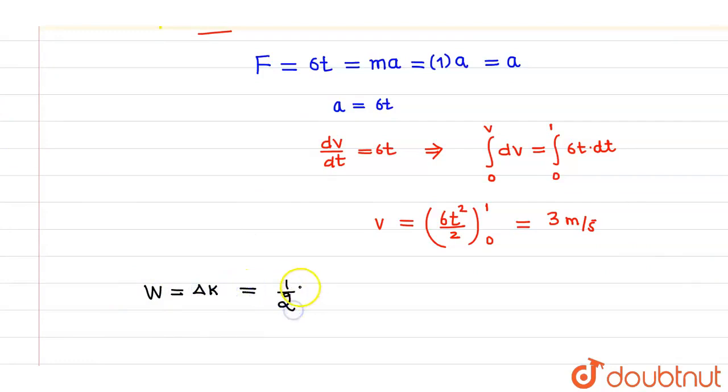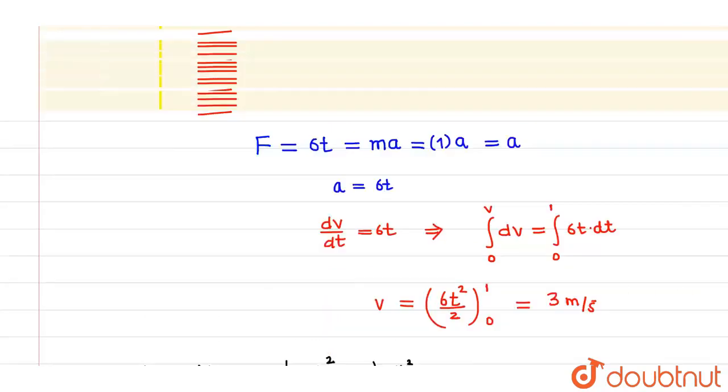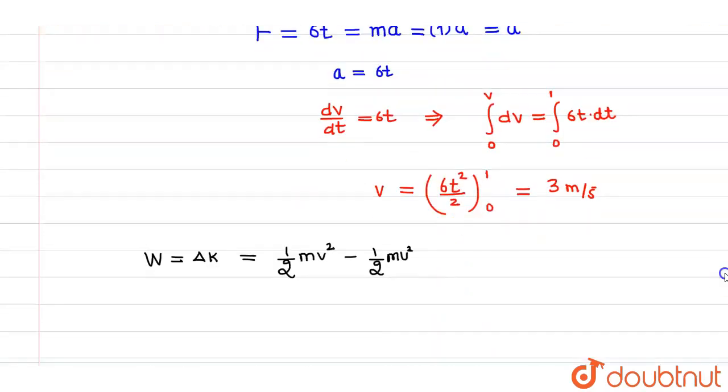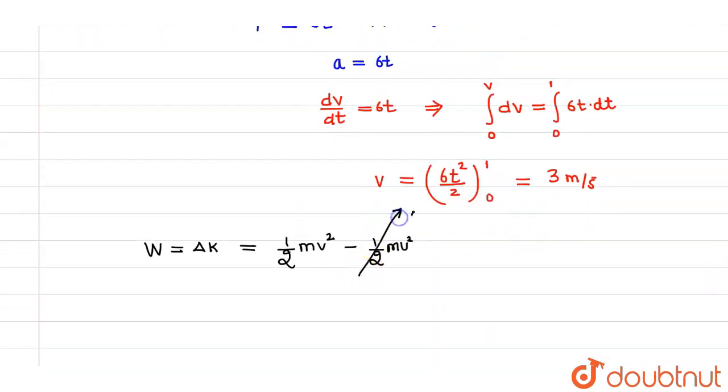But since it started from rest, that means initial velocity will be zero, so this term will be zero. So overall we have to find out the value of half mv squared, where v is 3 and m is 1.